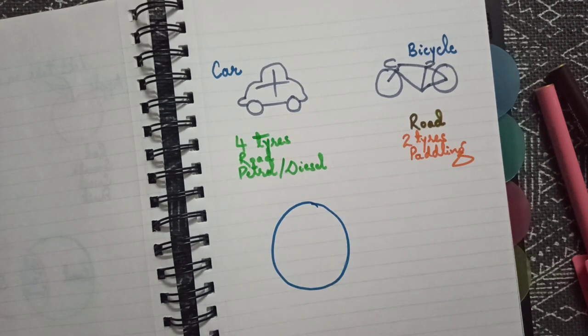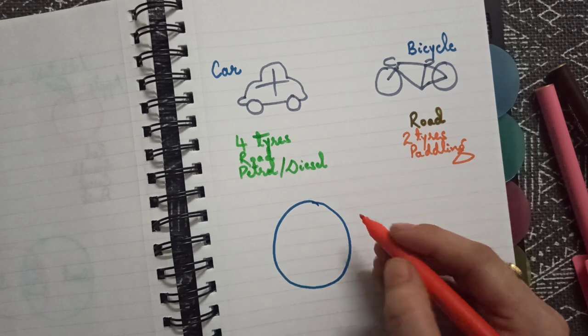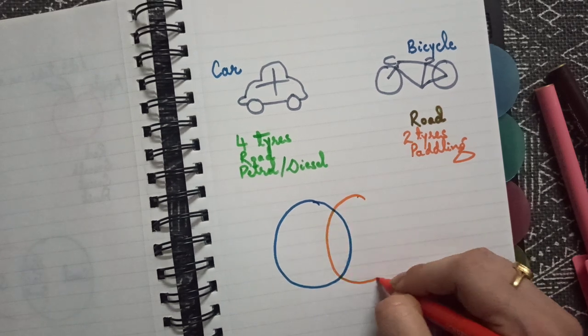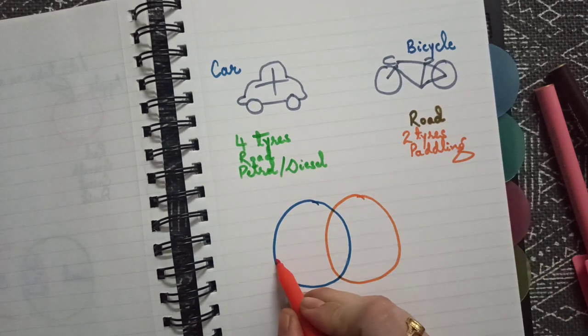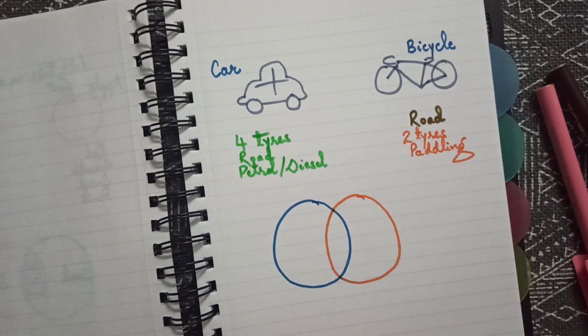It is not about the class, it is all about the concepts, how easily you are telling the kids. See, this blue one is for car and the orange one is for bicycle.